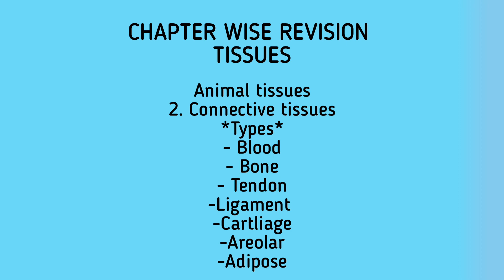The second type of connective tissue is bone — the framework that supports our body. Bone cells are called osteoblasts, embedded in a hard matrix composed of minerals such as calcium and phosphorus. The third is tendon, which connects muscles to bone. The fourth is ligament, which connects two bones to each other. The fifth is cartilage, where cells called chondrocytes are embedded in a solid matrix composed of proteins and sugars.